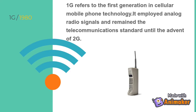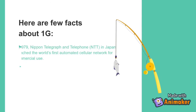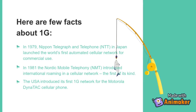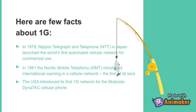Here are a few facts about 1G. In 1979, Nippon Telegraph and Telephone (NTT) in Japan launched the world's first automated cellular network for commercial use. In 1981, the Nordic Mobile Telephony (NMT) introduced international roaming in a cellular network, the first of its kind. The USA introduced its first 1G network for the Motorola DynaTAC cellular phone.